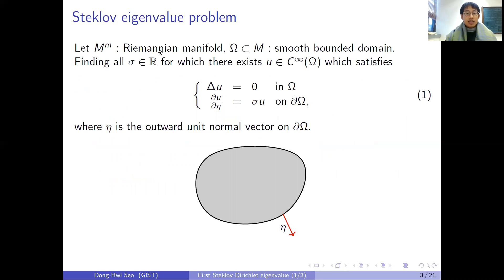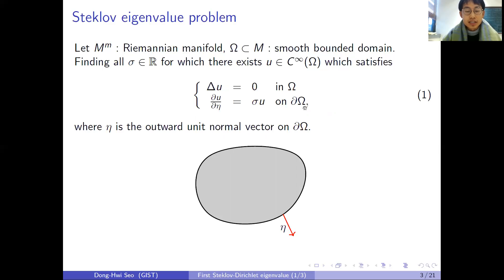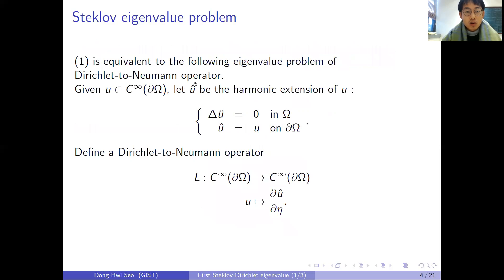Let me introduce the Stekloff eigenvalue problem. It was proposed by Stekloff in 1892. If you take an ambient manifold M and a smooth bounded domain omega, then the Stekloff eigenfunction is a smooth function defined in omega that satisfies harmonic in the interior, and the normal derivative is proportional to the value of the function on the boundary. This problem can be stated by the Dirichlet-Neumann operator, which is defined on smooth functions on the boundary and maps u into the normal derivative of the harmonic extension of u.